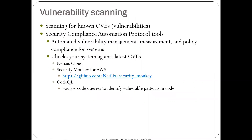Another prevention method is vulnerability scanning. Automated security compliance tools tap into the CVE database; for each CVE there is an indicator of compromise or indicator of vulnerability that can test whether your version is vulnerable. Tools like Nessus Cloud and Security Monkey for AWS can check all CVEs against everything running in your enterprise — that's what vulnerability scanning does.